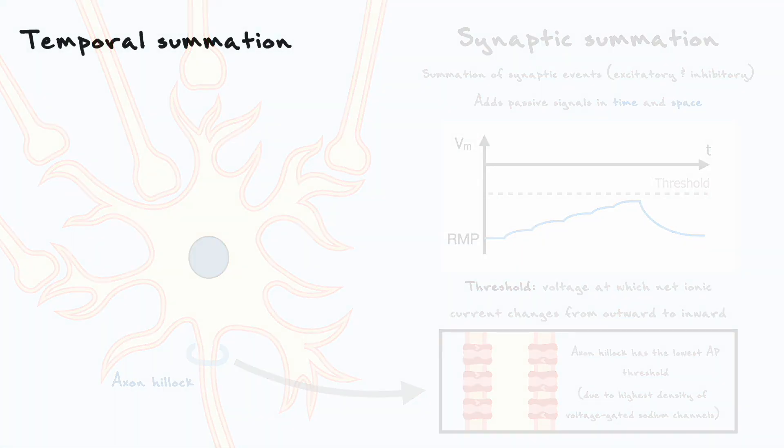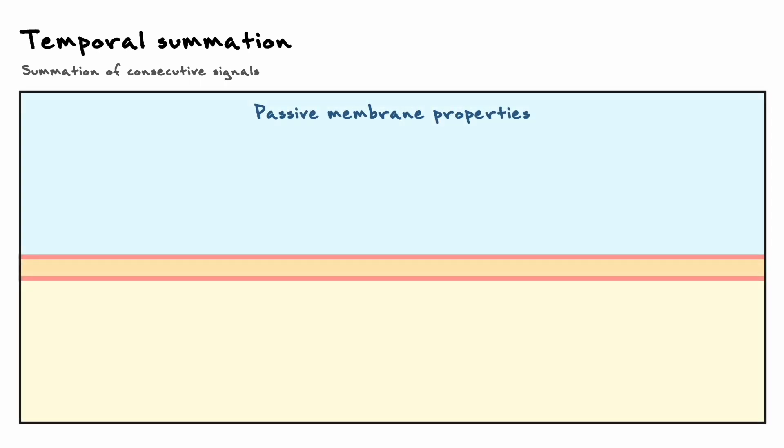Let's start with temporal summation, which is defined as the summation of two or more consecutive signals. To explain this principle, I want to reconsider the passive membrane properties that I have introduced previously such that I can better explain some new concepts.